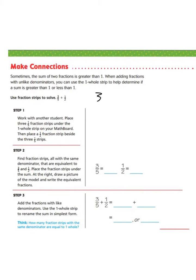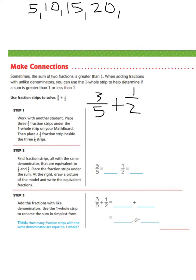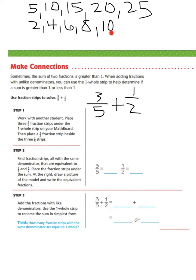Let's work out three-fifths plus one-half. The first step is to list our multiples of five — our first denominator — which are five, ten, fifteen, twenty, and twenty-five. Then we list our multiples of two: two, four, six, eight, and ten. We can stop because we see a common multiple of ten. So we're going to use ten as our common denominator to create equivalent fractions.